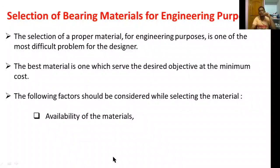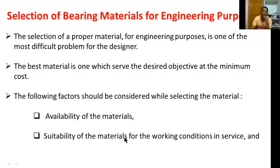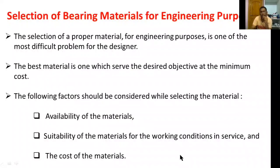The first factor is availability of the raw material for making the bearings. The second is the suitability of the material for the working conditions in service — working conditions means surrounding atmospheric conditions and thermal conditions. The third important factor is cost of the raw materials. These three factors affect the selection of bearing materials.